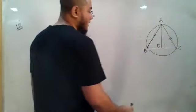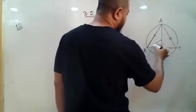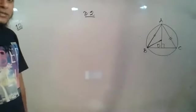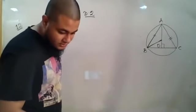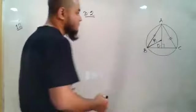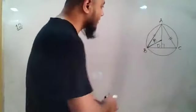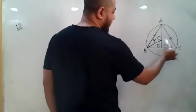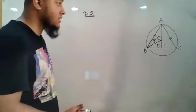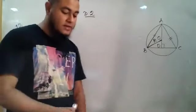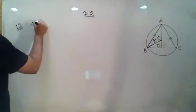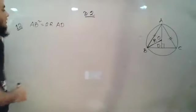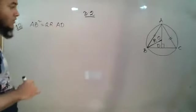To work with the circumradius, we draw the circumcircle with center O. Connecting O to any vertex gives the circumradius R. So OA = OB = OC = R. We need to prove that AB² = 2R × AD.